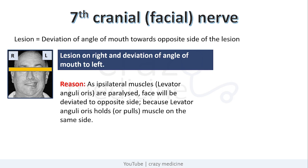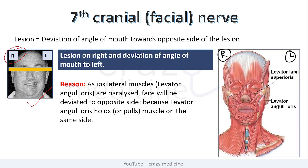Next is the 7th cranial nerve, that is the facial nerve. A lesion will cause deviation of the angle of mouth towards the opposite side of lesion. For example, if there is a lesion on the right side of the facial nerve, there will be deviation of the angle of mouth to the left. The reason is that as ipsilateral muscles are paralyzed, the face deviates to the opposite side because the levator anguli oris holds or pulls the muscle on the same side. So if there is a lesion on the right side, the left-sided muscle is functioning, which causes elevation or deviation of the mouth towards the opposite side.